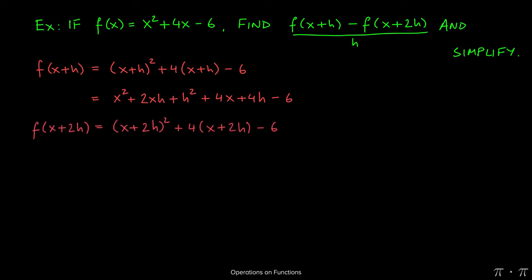Which is f of x plus 2h, this piece on the right-hand side. But here we do the exact same thing that we did with x plus h, but instead of replacing it with x plus h, we're replacing it with x plus 2h. So squaring this out using the special product formula gives us x squared plus 4xh plus 4h squared, plus now we distribute the 4: 4 times x gives us 4x, 4 times 2h gives us 8h, minus the 6.